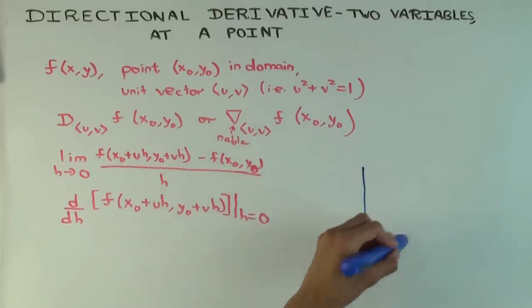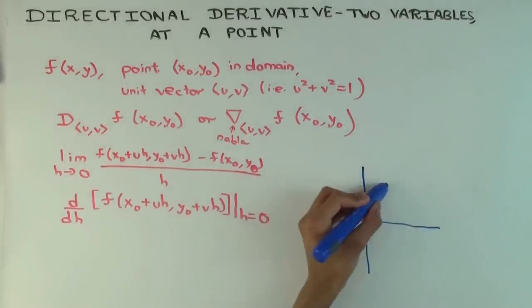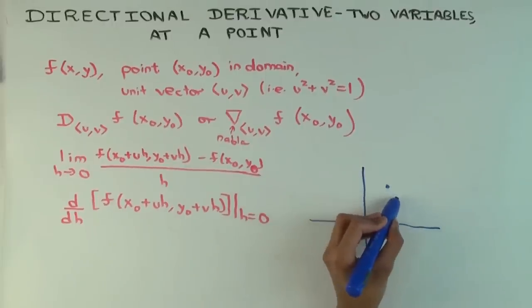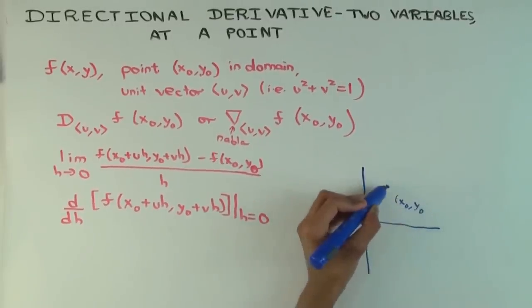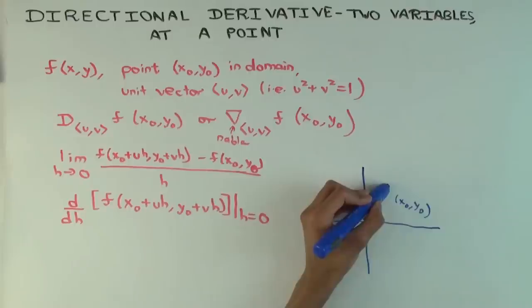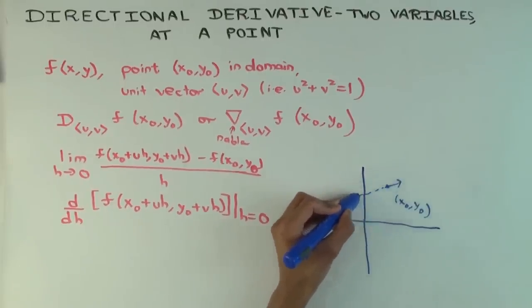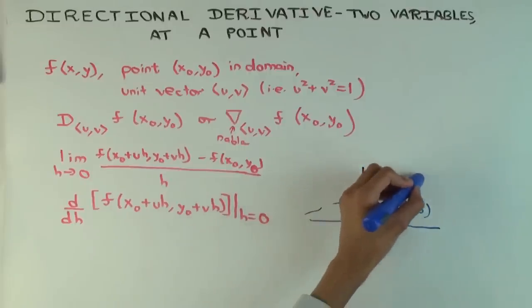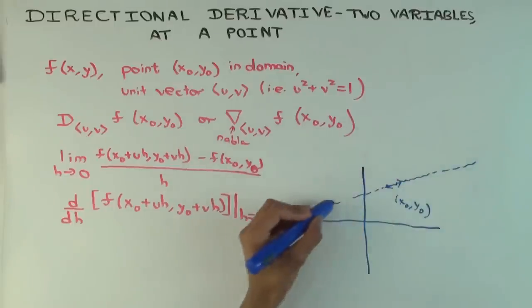A picture is worth a thousand words. So here's the picture. So here's the point x₀ y₀. And let's say the vector uv is pointing like that. So the line along which you are interested in is this line.